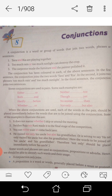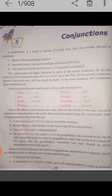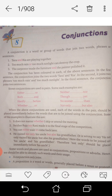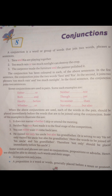In the first sentence, the conjunction joins the two words Tara and Rhea. In the second, it joins two phrases: too much rain and too much sunlight. For the third sentence, the conjunction joins two sentences.